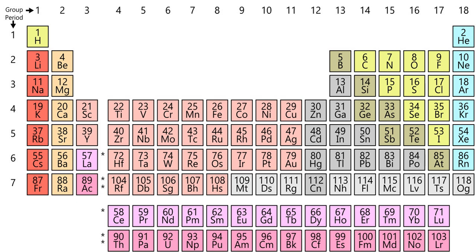The electron configuration for neon, for example, is 1s² 2s² 2p⁶. With an atomic number of 10, neon has two electrons in the first shell and eight electrons in the second shell — two electrons in the s subshell and six in the p subshell. In periodic table terms, the first time an electron occupies a new shell corresponds to the start of each new period, these positions being occupied by hydrogen and the alkali metals. Since the properties of an element are mostly determined by its electron configuration, the properties of the elements likewise show recurring patterns or periodic behavior.